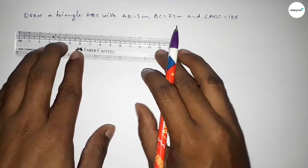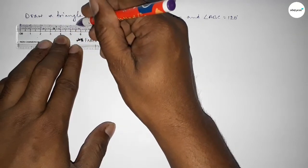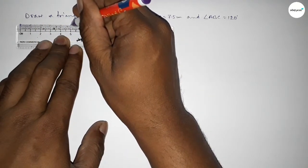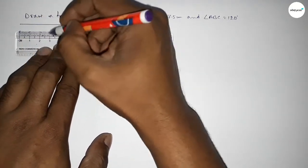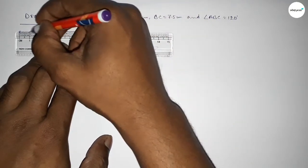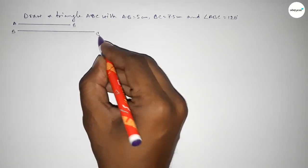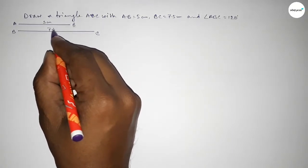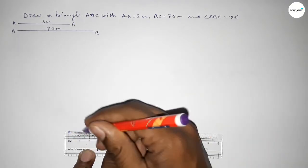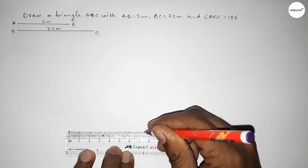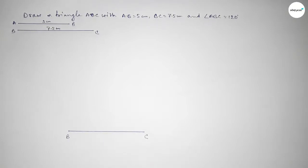First, drawing a line of length 5 centimeter — this is AB — and another line of length 7.5 centimeter — this is BC. So this line is AB at 5 centimeter and this one BC at 7.5 centimeter. Now drawing the BC line of 7.5 centimeter, taking point B here and point C here.